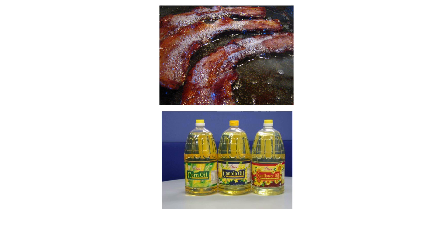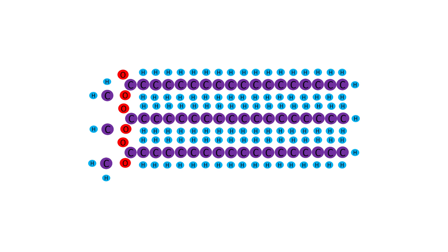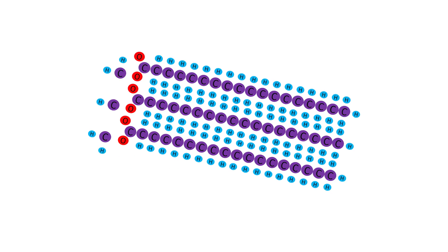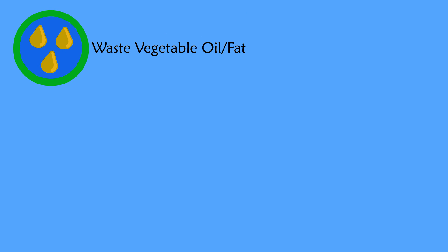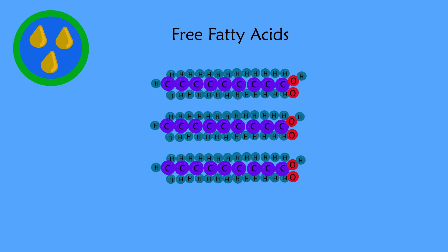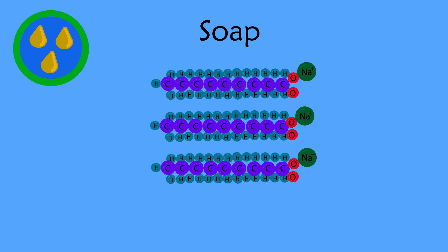To make biodiesel, fats and oils or triglycerides react with a catalyst and an alcohol to produce ethyl esters or biodiesel and glycerin. However, if you are making biodiesel using waste vegetable oil or fat, those triglycerides may be degraded and have a lot of free fatty acids not attached to a glycerol backbone. These free fatty acids can react with the catalyst first to create soap, which must be removed.